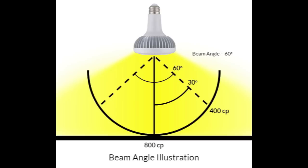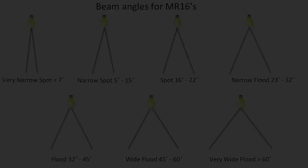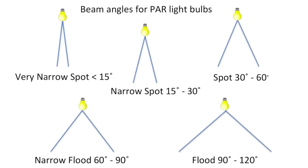MR16s will usually fall in the narrow spot, spot, and sometimes flood categories. PAR bulbs will usually, by definition, fall in the spot and narrow spot groups. R bulbs will usually be flood and wide flood.